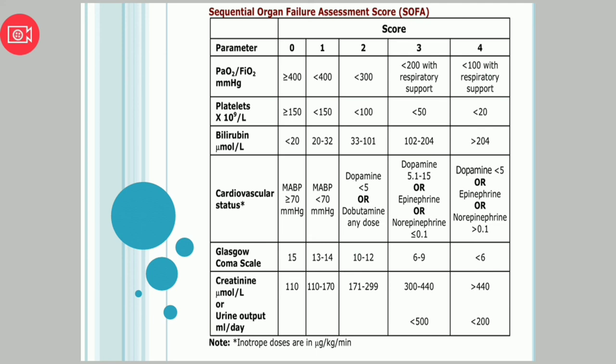For GCS (Glasgow Coma Scale): a GCS of 15 is normal, score 0. GCS 13–14, score 1. GCS 10–12, score 2. GCS 6–9, score 3. GCS less than 6, score 4.